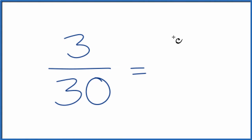3 divided by 3 is 1, and 30 divided by 3 is 10. So our common factor is 3. So now we've simplified 3/30 down to 1/10. We can't reduce this any further.